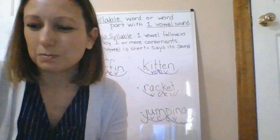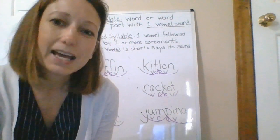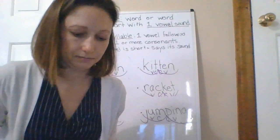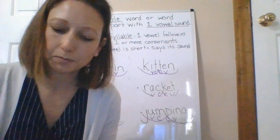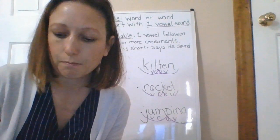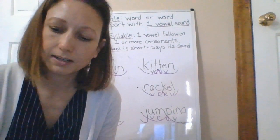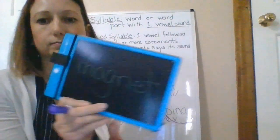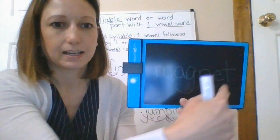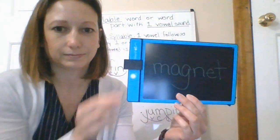Get your paper ready — we are going to practice writing some words with two syllables. Our first one is 'magnets.' We want to sound it out by syllables. What's our first syllable? 'Mag.' So write M-A-G. And then 'net' — N-E-T. Check your work: mag-net — two consonants between two vowels — magnet.